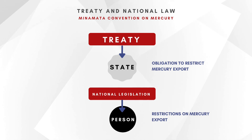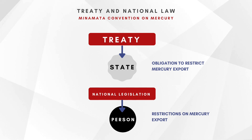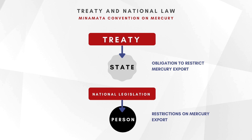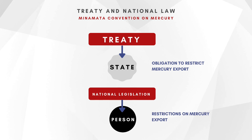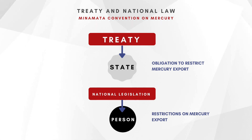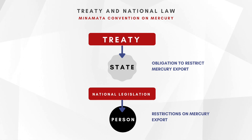A quick look at the relationship between a treaty and national law. A treaty sets out obligations to a state that is a party to it. For example, in the Minamata Convention on Mercury, the treaty obliges the state to reduce or control mercury exports. The state then has to implement this through enacting national legislation, normally through a parliamentary process. That national legislation then becomes binding on individuals, companies, and persons within the state. The treaty is normally binding on the state and not on the individual.